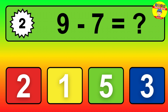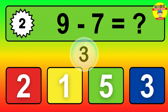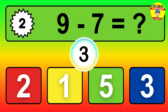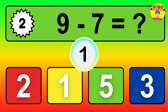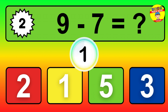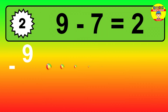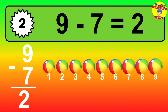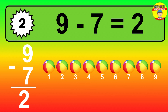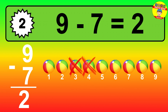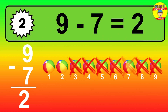Question 2. 9 minus 7 equals what? So the answer is 9 minus 7 is 2. Let's count it. 1, 2.